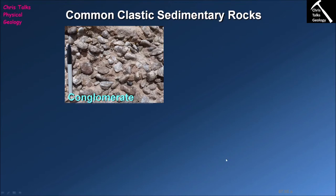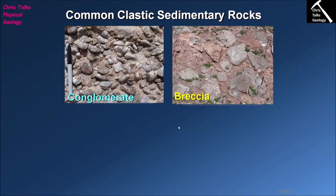The first two types of common clastic sedimentary rocks we're going to talk about are conglomerates and breccias. Conglomerates and breccias are types of rock which contain clasts that are in general larger than two millimeters. This means they contain boulder-sized clasts, cobble-sized clasts, and gravel-sized clasts, and those larger clasts are held together by a matrix of material that helps to cement them to form a solid rock.